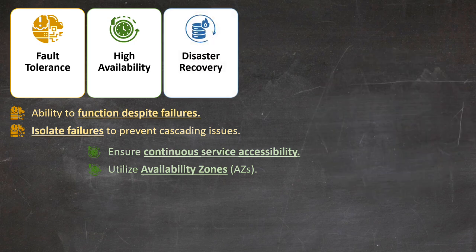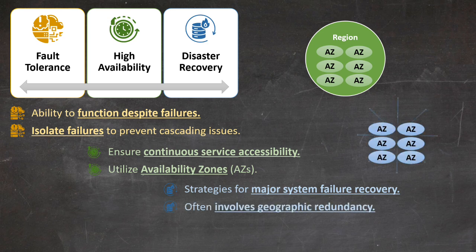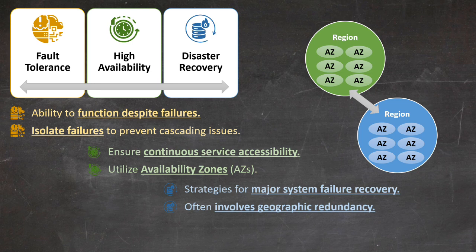Lastly, we have disaster recovery, or DR. This involves strategies for recovering from major system failures. While high availability focuses on preventing downtime, disaster recovery is about bouncing back when significant issues do occur. This could involve geographic redundancy, where your system can operate from a different location if an entire data center fails.